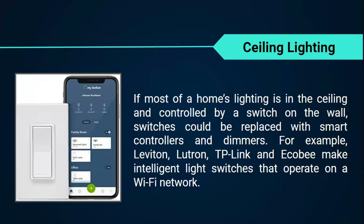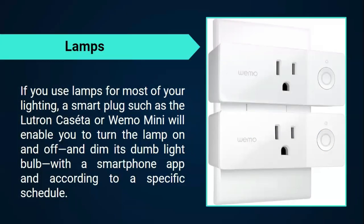For example, Leviton, Lutron, and TP-Link and Ecobee make intelligent light switches that operate on a Wi-Fi network. For lamps, a smart plug such as the Lutron Caséta or Wemo Mini will enable you to turn the lamp on and off — and of course dim a dumb light bulb, which refers to the regular lighting you may currently be using. This can be done with a smartphone application and according to a specific schedule.